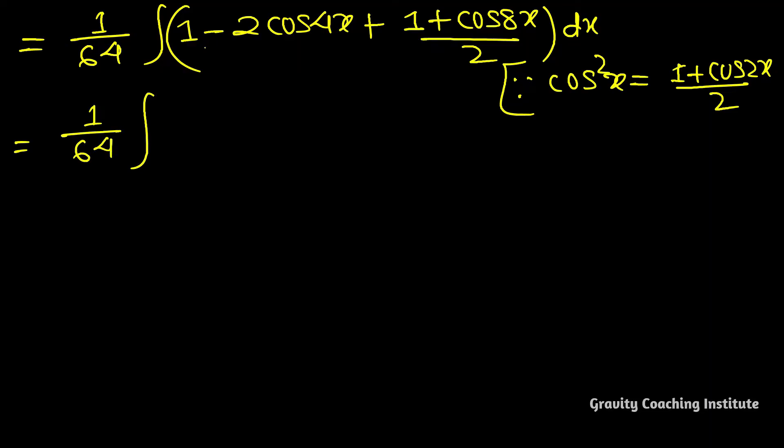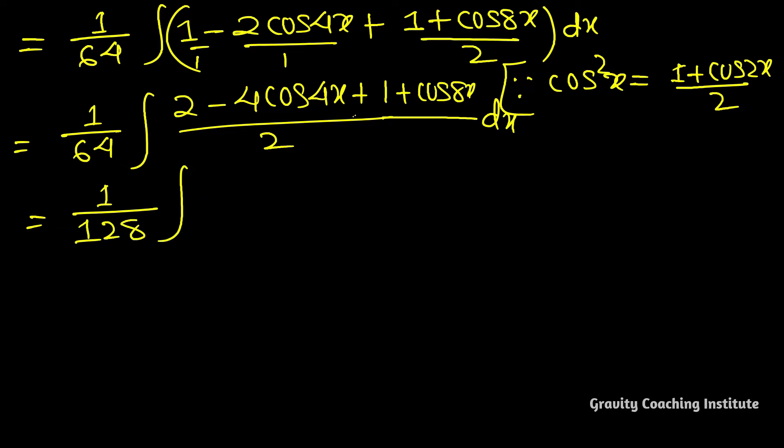Since cos square x equals formula 1 plus cos 2x by 2. Taking LCM here gives 2 minus 4 cos 4x plus 1 plus cos 8x. Taking this 2 outside gives 128 integration, and this becomes 3 minus 4 cos 4x plus cos 8x dx.